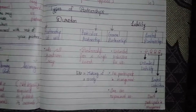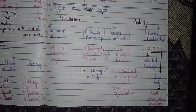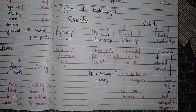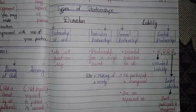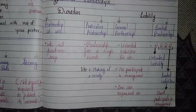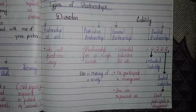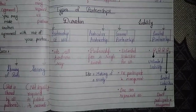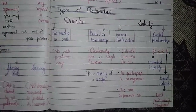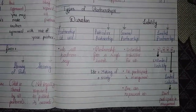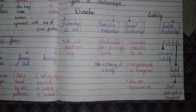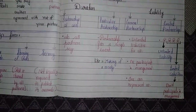Now we will talk about types of partnerships. There are basically four types: first is partnership at will, second is particular partnership, third is general partnership, and fourth is limited partnership. Two types are divided on the basis of duration and two on the basis of liability.